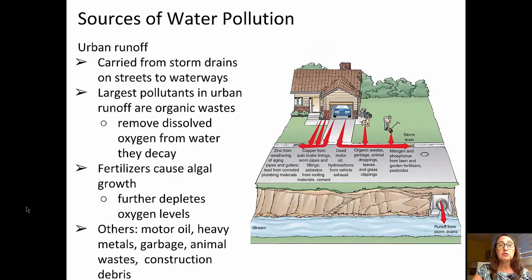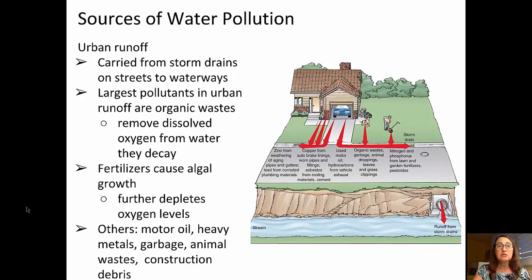Urban runoff is where pollutants are carried from storm drains on streets into our waterways. The largest pollutants in urban runoff are typically organic wastes. Additionally, fertilizers cause algal growth, which depletes oxygen levels in waterways. There are many sources of pollutants in an urban environment visible on this slide — I encourage you to pause and take a look.